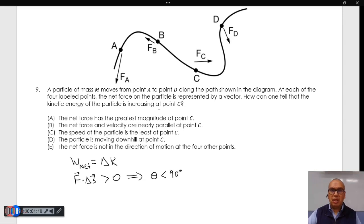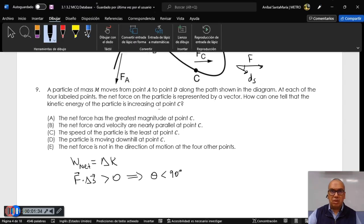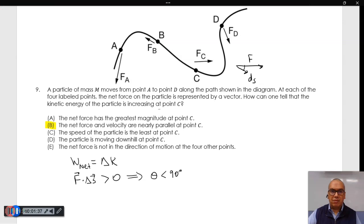At point C, the displacement vector is going this way, and the force vector is going this way. So the angle is acute, the product is positive, and the kinetic energy is increasing. The answer that best corresponds to this description is option B. The net force and velocity are nearly parallel at point C.